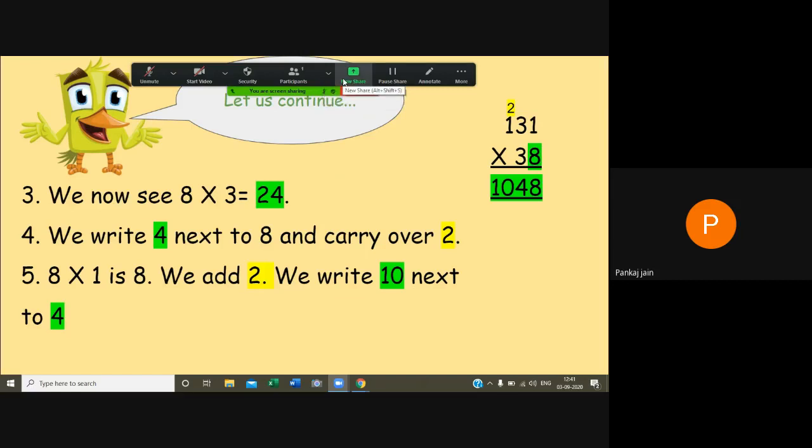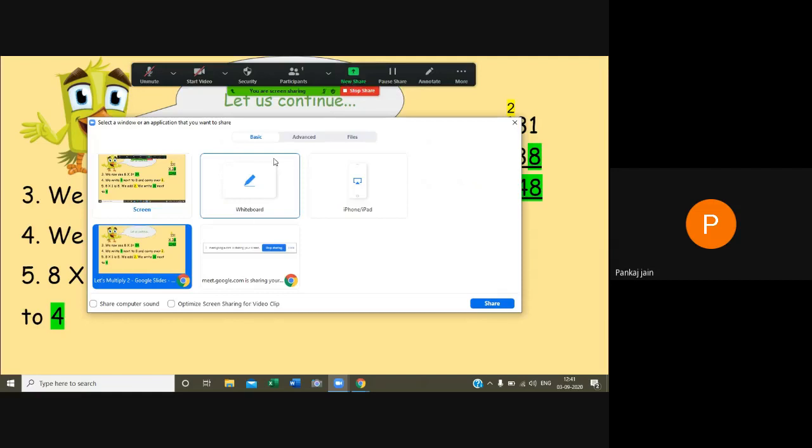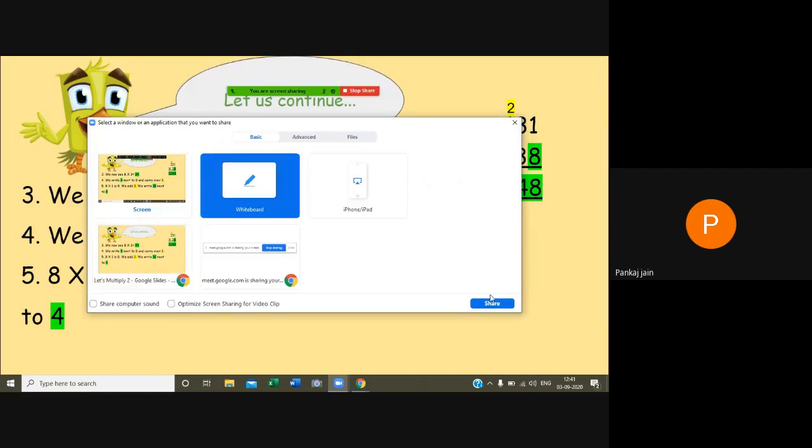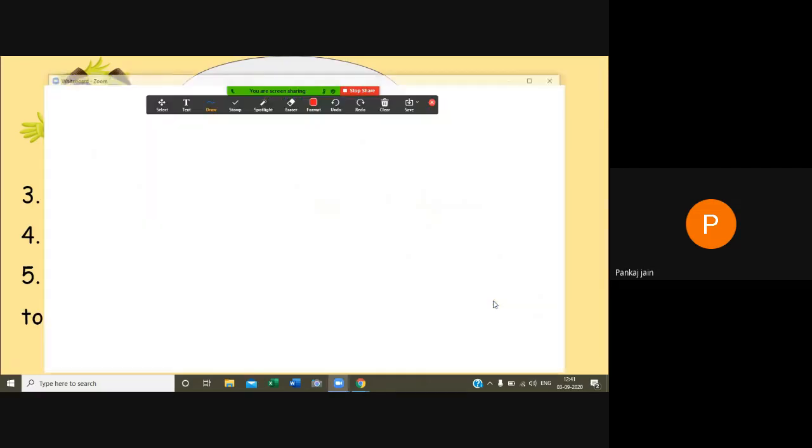Now choose whiteboard from here and click on the share. So this is a whiteboard. By default you will get here all the sub-options for the annotate. You can draw, you can write like this.